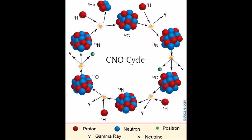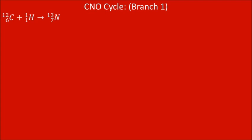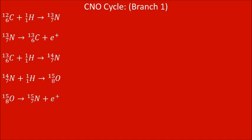This reaction occurs in two branches. The first branch starts when hydrogen combines with carbon-12 to produce nitrogen-13, which then decays to carbon-13 and a positron. Carbon-13 combines with another hydrogen nucleus to make nitrogen-14. Nitrogen-14 then combines with another hydrogen to make oxygen-15. Oxygen-15 decays to nitrogen-15 and a positron. When nitrogen-15 combines with the final hydrogen, a helium nucleus and carbon-12 are formed.